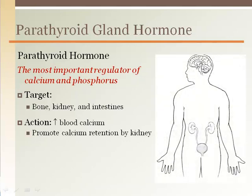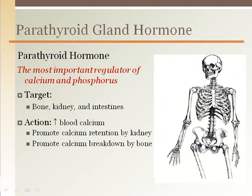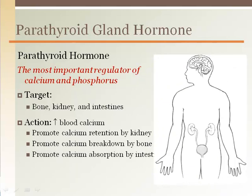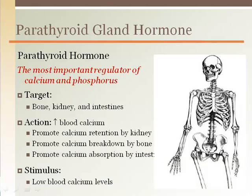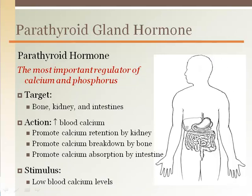Parathyroid hormone targets the bones, kidneys, and intestines to increase blood calcium. The kidneys are stimulated to retain calcium, calcium is taken away from bone, and more calcium is absorbed by the intestines — all working together to increase blood calcium levels. Therefore, the stimulus to release parathyroid hormone is low calcium levels.